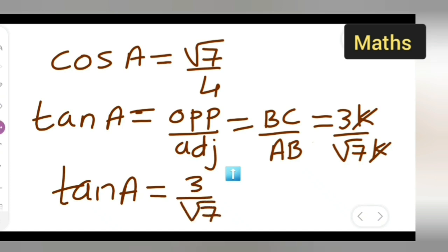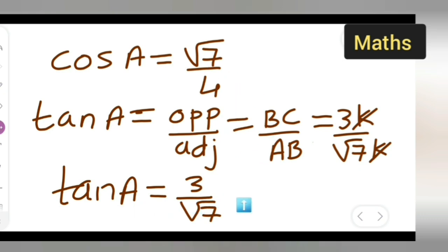Therefore, we got cos A equal to root 7 upon 4, and tan A equal to 3 upon root 7. I hope you have understood how to solve this. Thanks for watching — don't forget to like, subscribe to my channel, share with your friends, and press the bell icon for more updates.